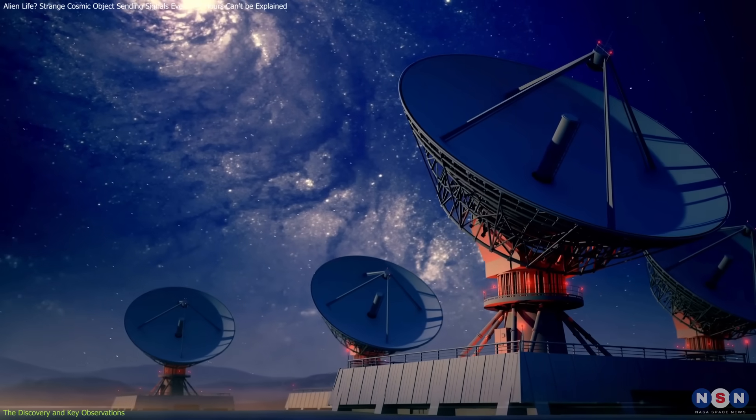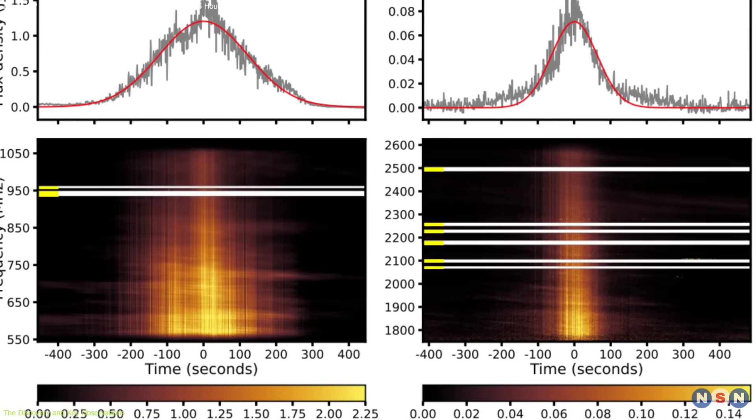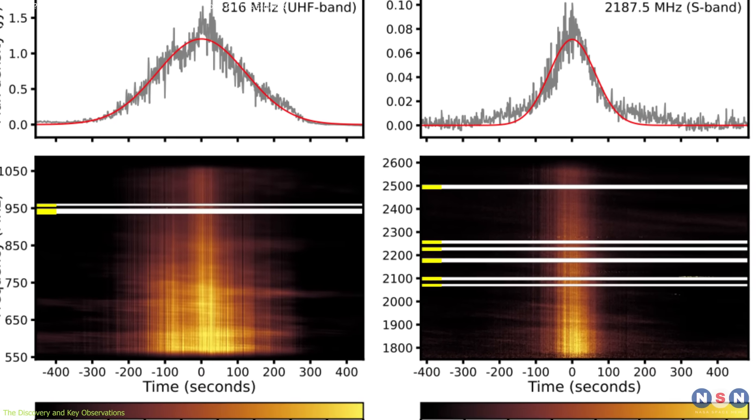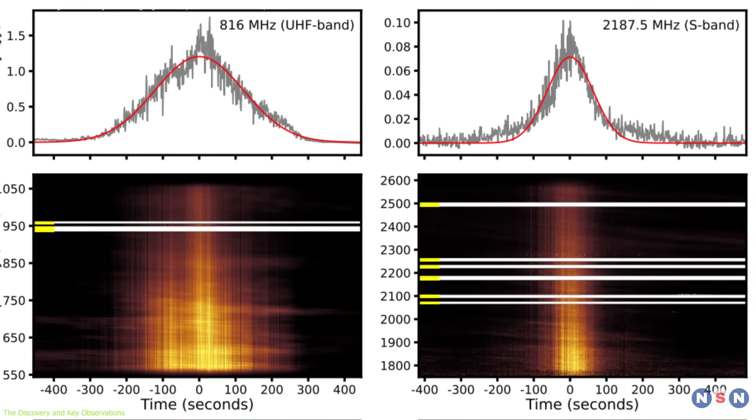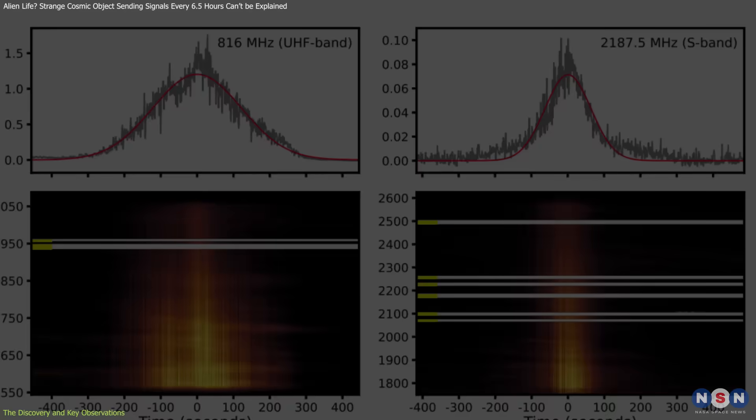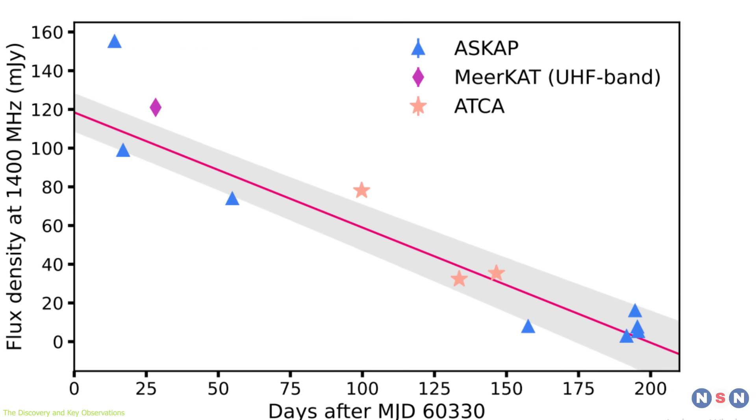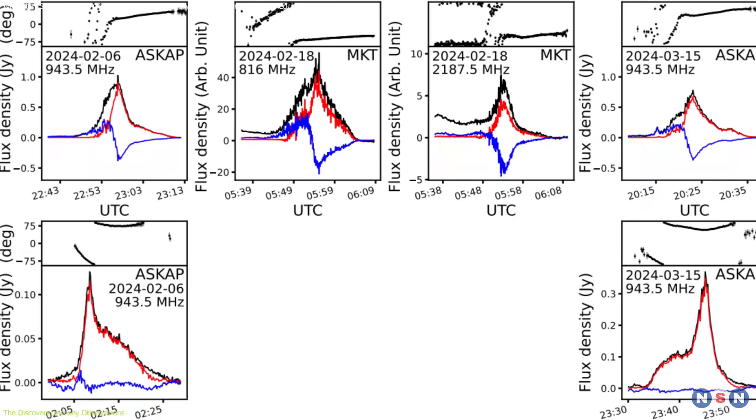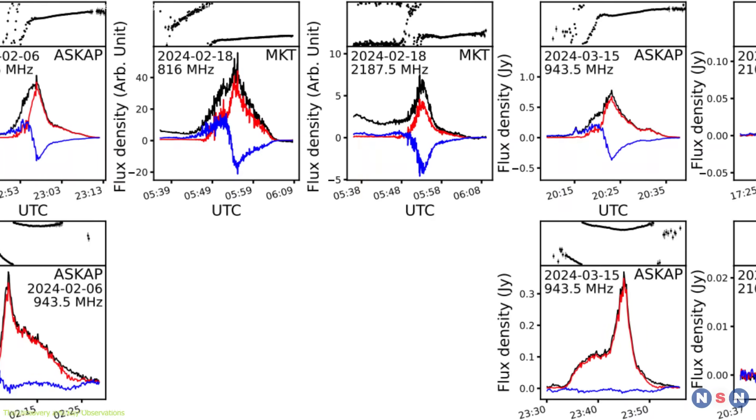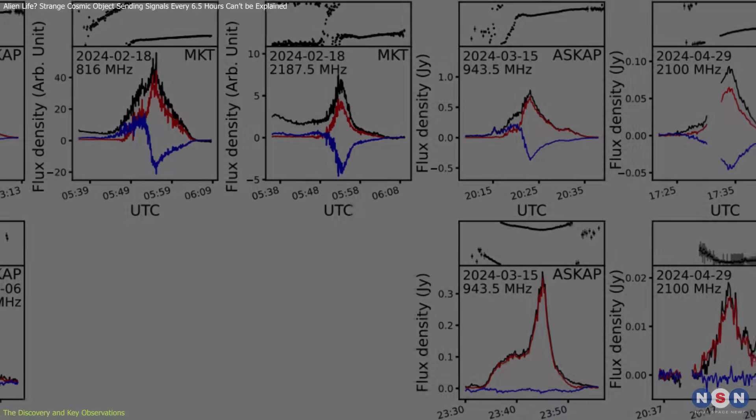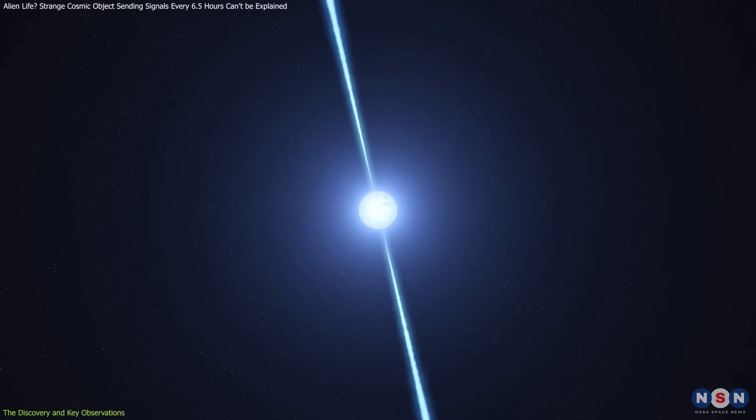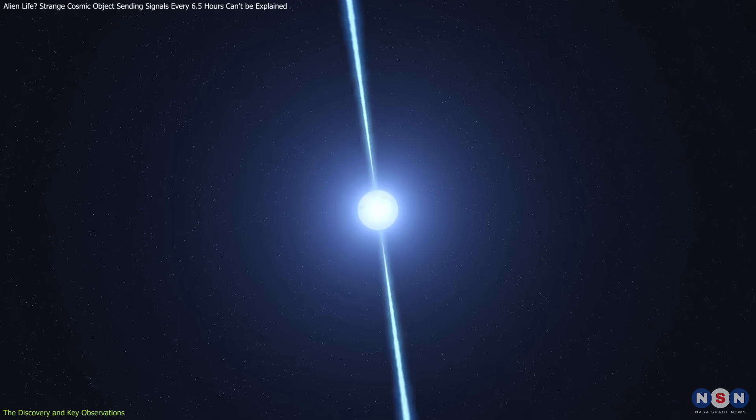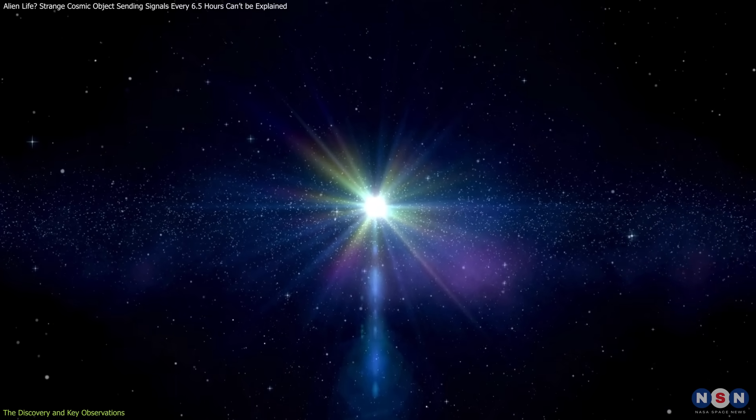While conducting routine surveys of the sky, they detected an unusual repeating signal from a celestial object located within our Milky Way galaxy. What made this interesting was the extremely slow repetition rate. The signal appeared once every 6.45 hours. Compared to typical pulsars that rotate multiple times per second, this was an anomaly of staggering proportions.